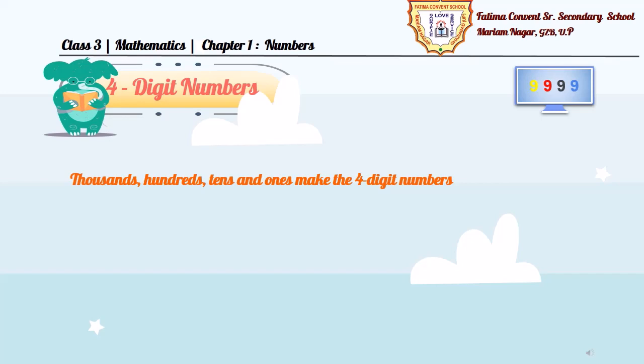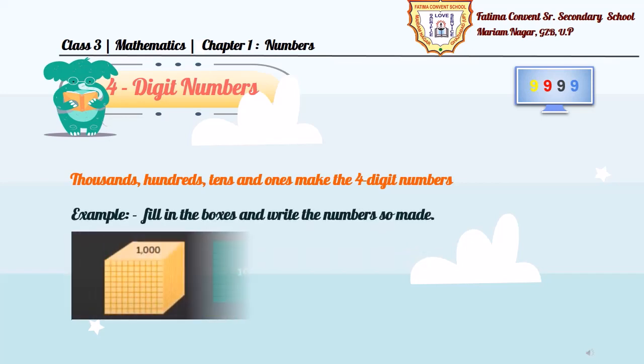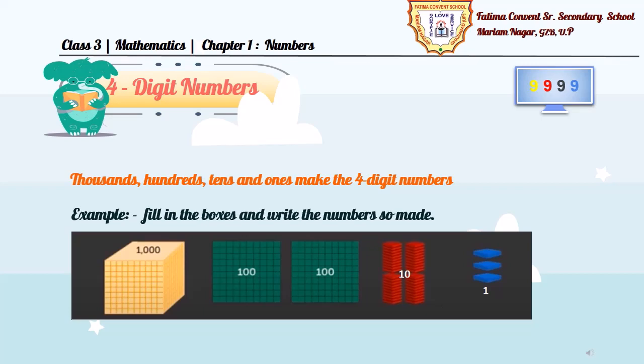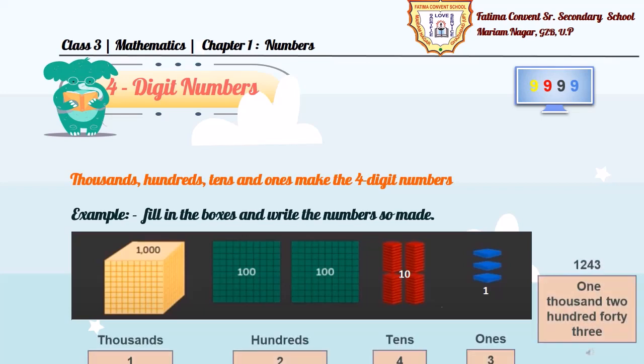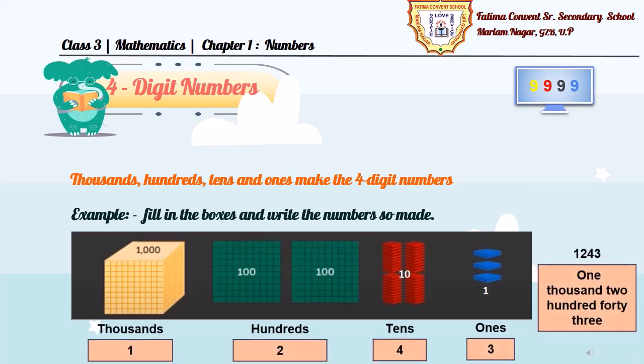Now, let's see some examples to frame the numbers using boxes. Fill in the boxes and write the numbers so made. In thousands we have 1, in hundreds we have 2 boxes, in tens we have 4, and in ones we have 3. So, the number formed by these boxes will be 1243.